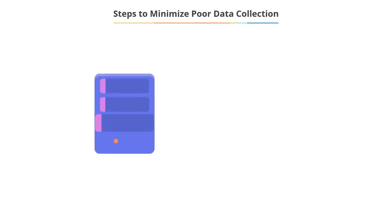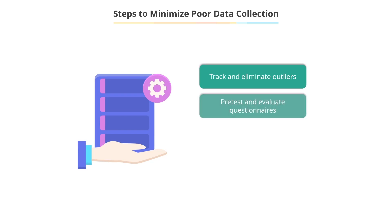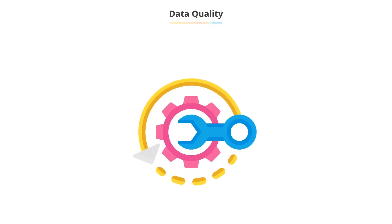Some steps can be taken to minimize the chances of collecting poor quality data. Outliers can be logically tracked and eliminated. Questionnaires can be pre-tested and evaluated for quality. Personnel involved in data collection need to be trained and allotted adequate time. Despite the best efforts, shortcomings could show up later. Findings from statistical analysis should be carefully used.